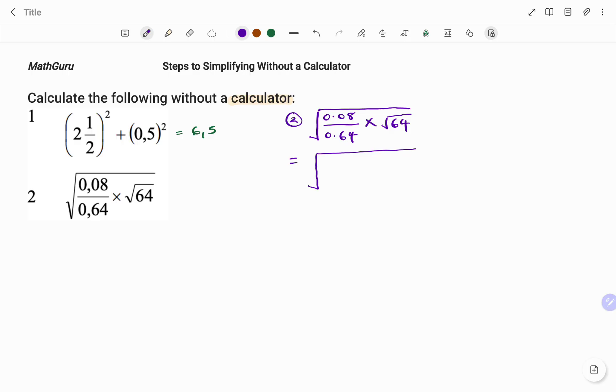So 0.08 by 100 will give me 8 over, I do the same thing at the bottom by multiplying by 100. That will be 0.64 times 100, 64.